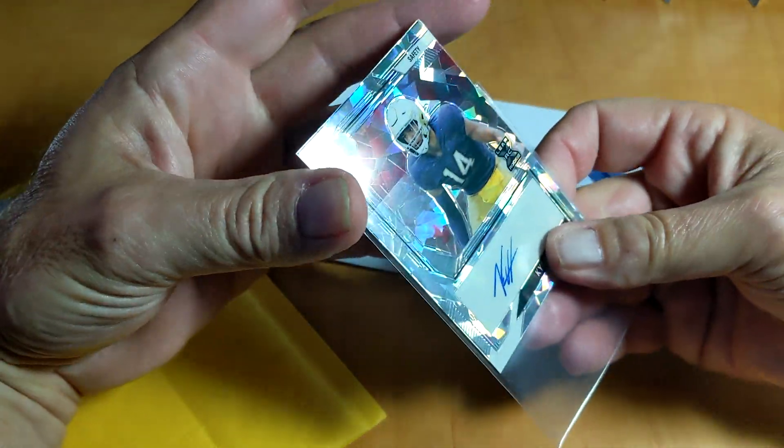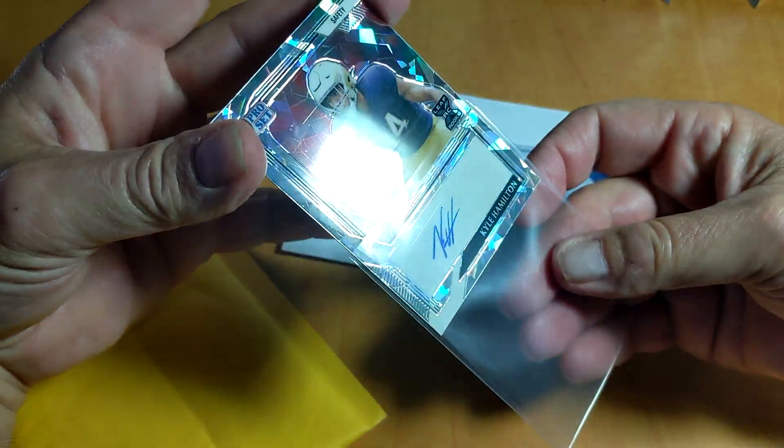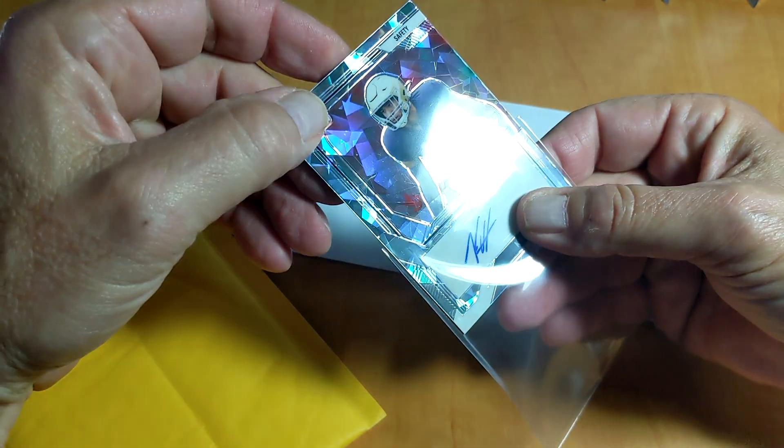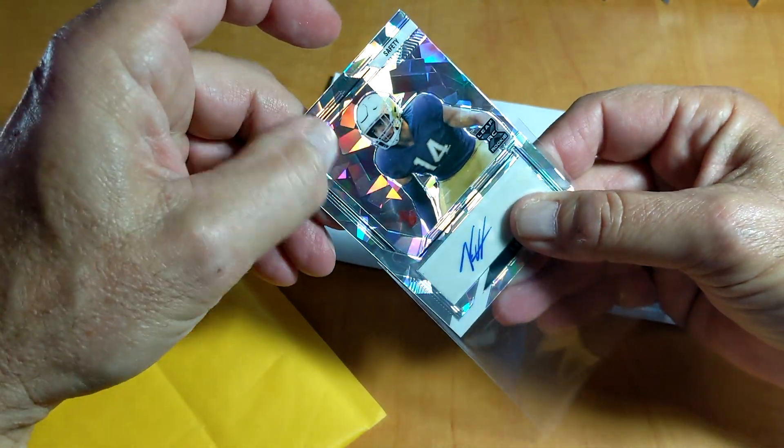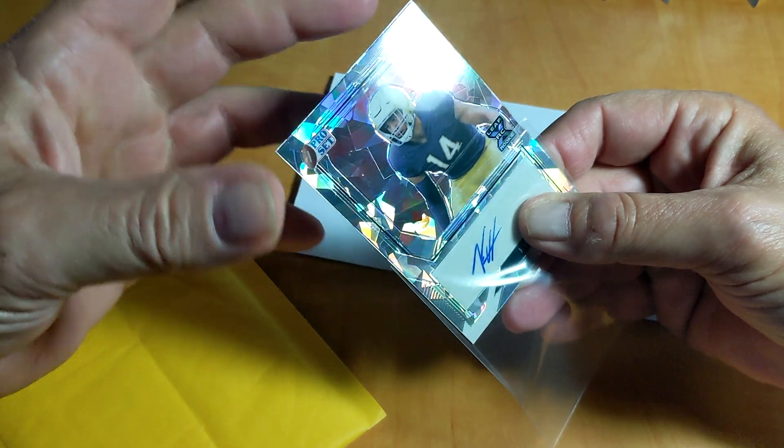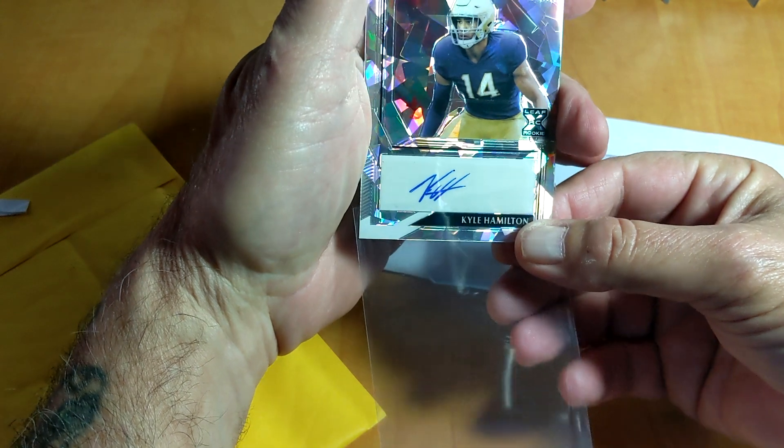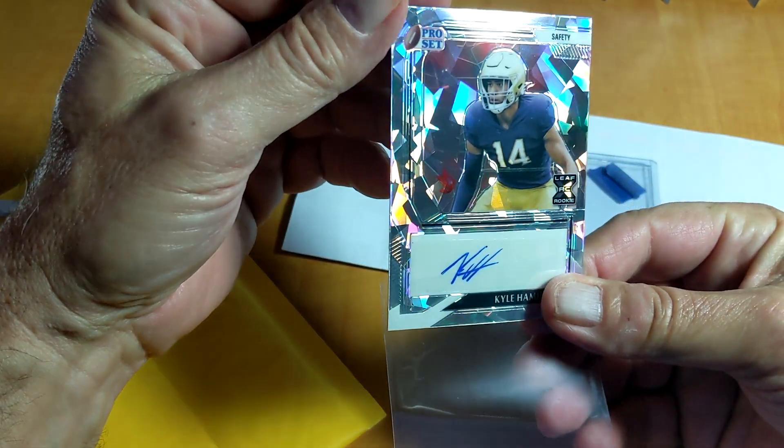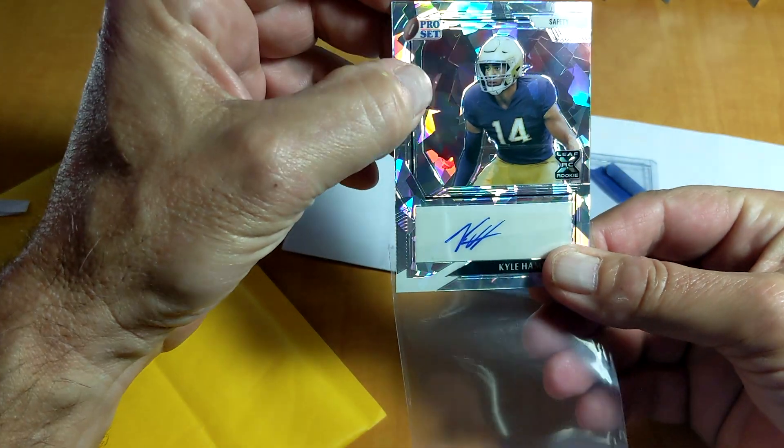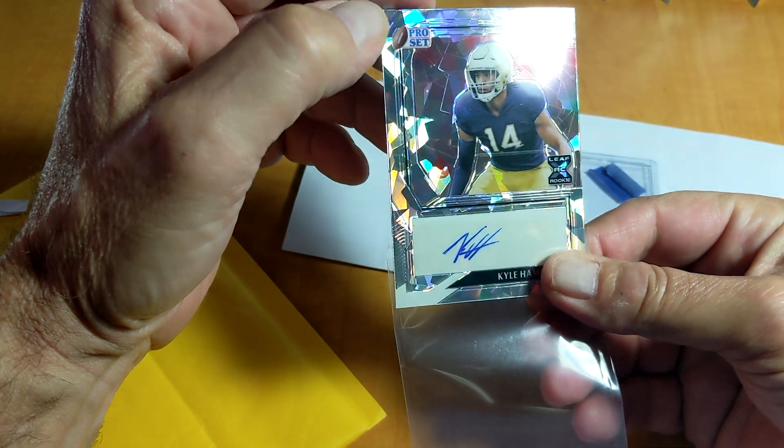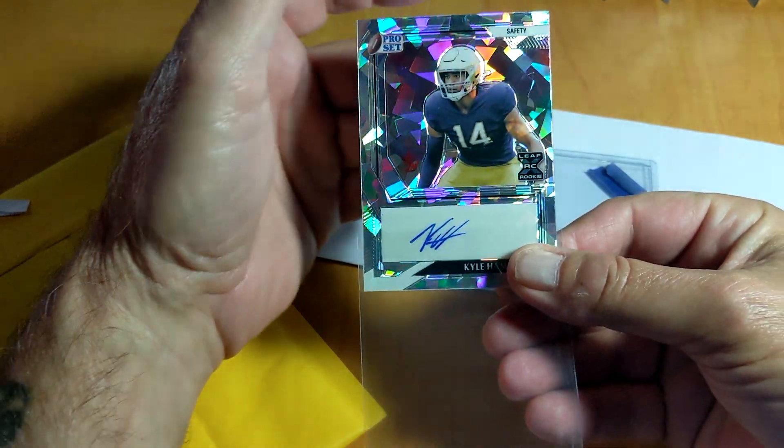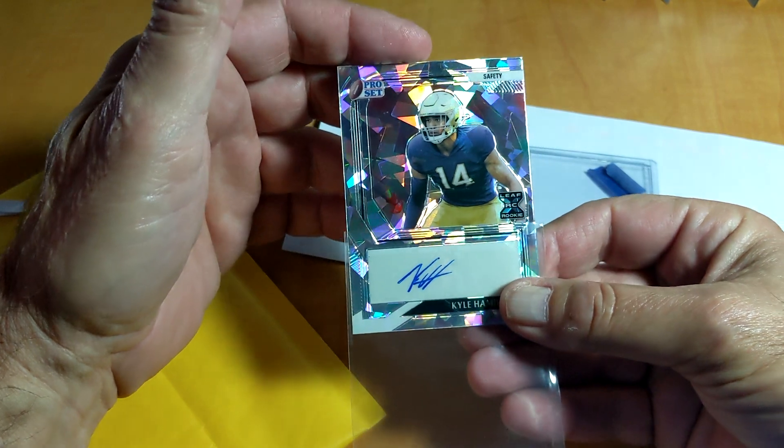Rookie card. Got a little surface abrasion here, it's not exactly near mint. What are you gonna do? Rookie auto - this is not near mint at all. It's got three that can't grade. This one's for the PC.